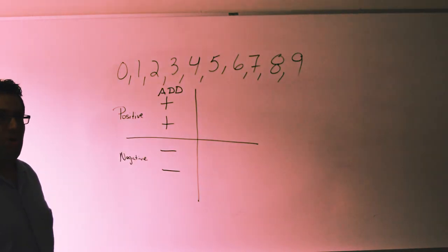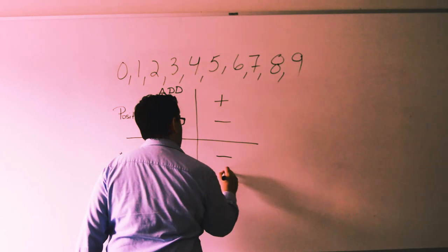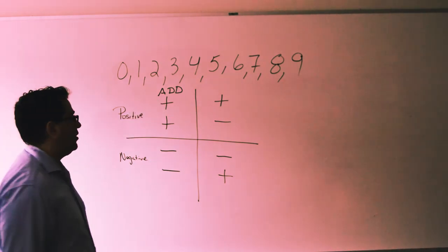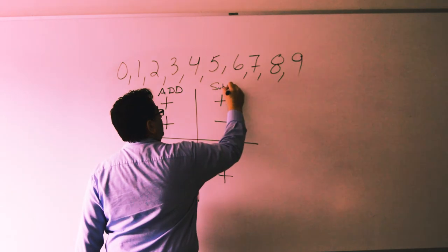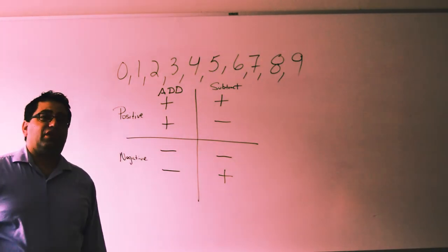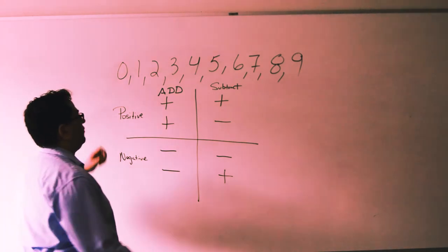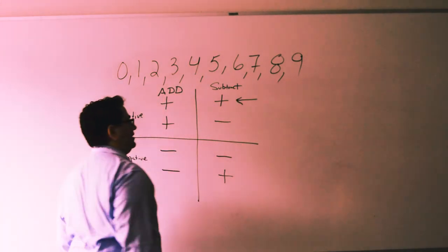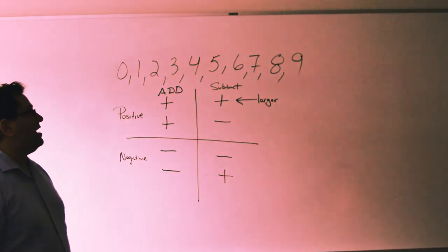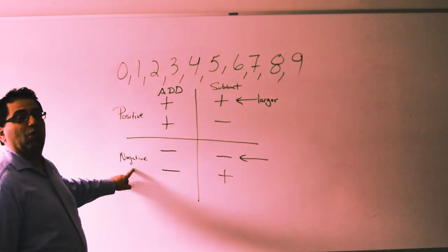Our other combinations are if we have a positive number and a negative number, or a negative number and a positive number. When you see that you have a positive and a negative number, we're going to subtract. When you're done subtracting, you're going to look for the number that is larger. If the larger number was positive, then your answer will be positive. If the larger number was negative, then you will have a negative answer.